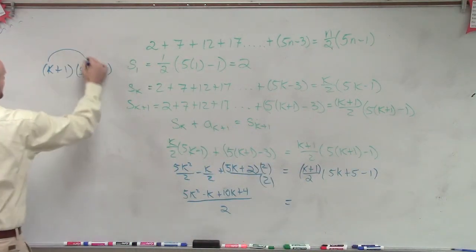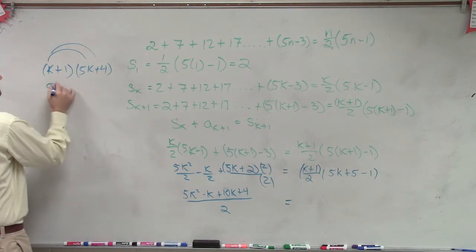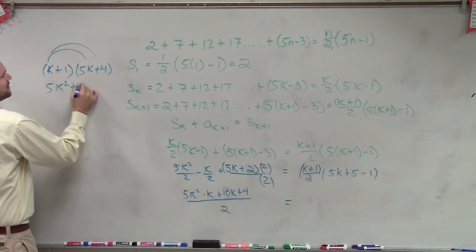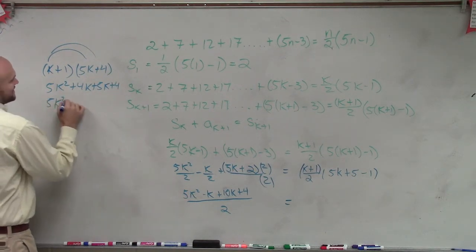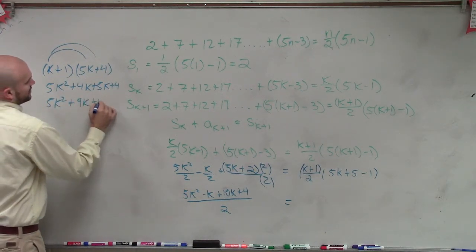So this would be essentially k plus 1 times 5k plus 4. So therefore, applying FOIL, I get 5k squared plus 4k plus 5k plus 4, which is 5k squared plus 9k plus 4.